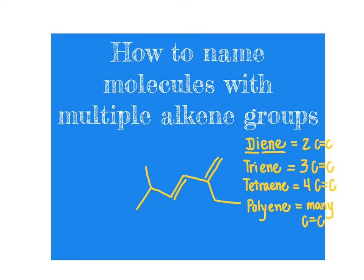We will run into a lot of molecules, particularly in nature, such as lycopene — a pigment molecule produced by tomatoes thought to have nutritional effects — which we would classify as a polyene because it has many alkene groups. By the end of this segment, you should be comfortable coming up with IUPAC names for molecules that have more than one alkene group. We'll focus on molecules with somewhere between two and four alkene groups — dienes, trienes, and tetraenes.